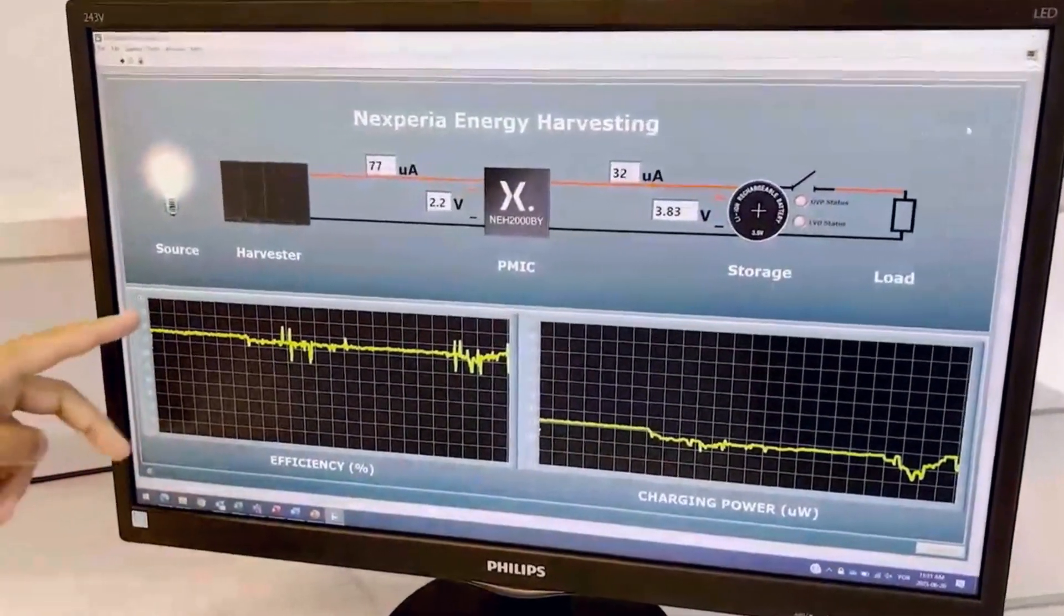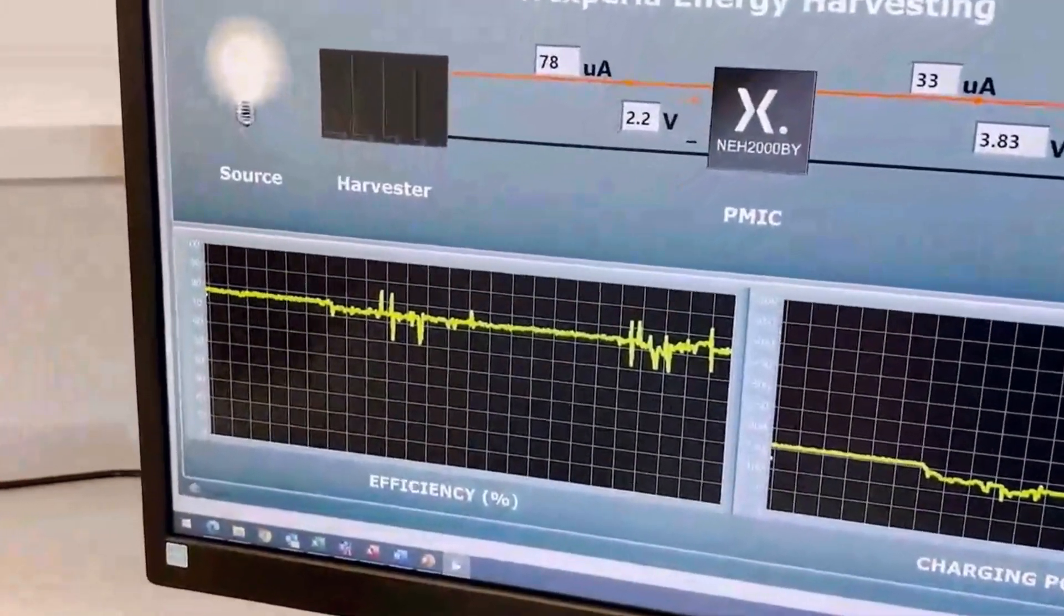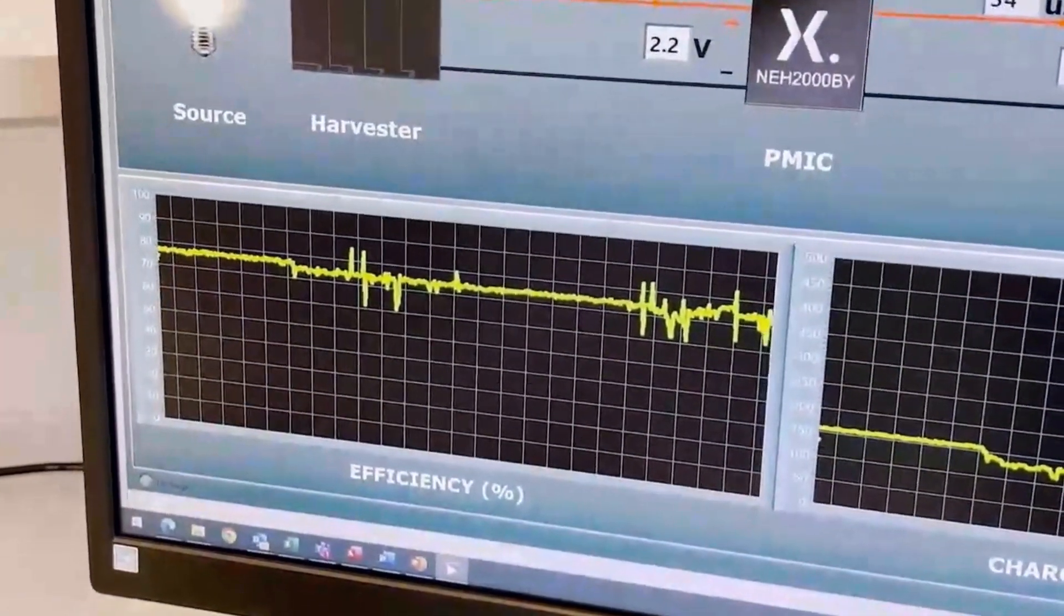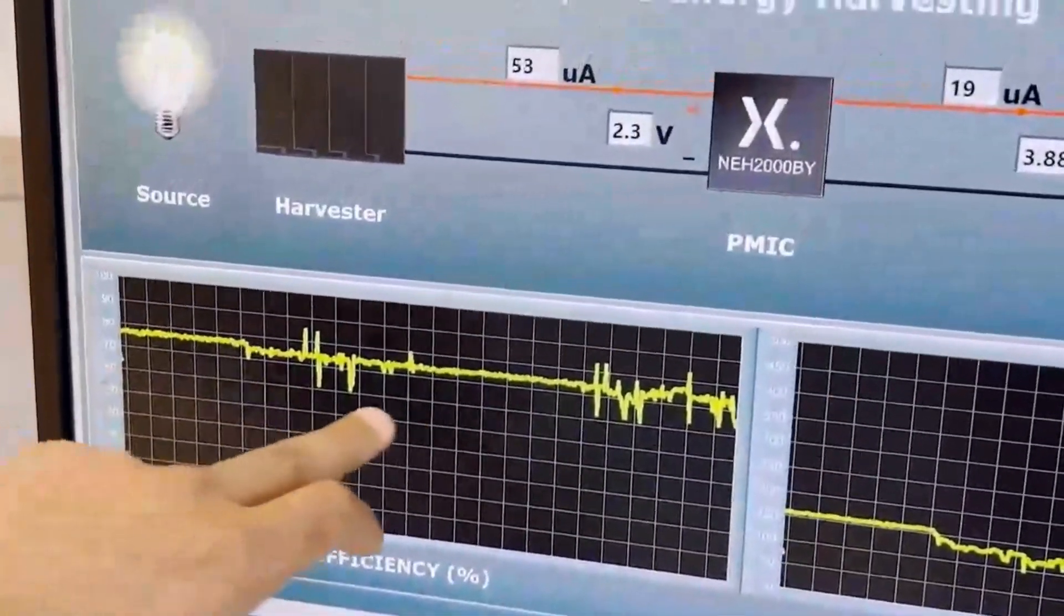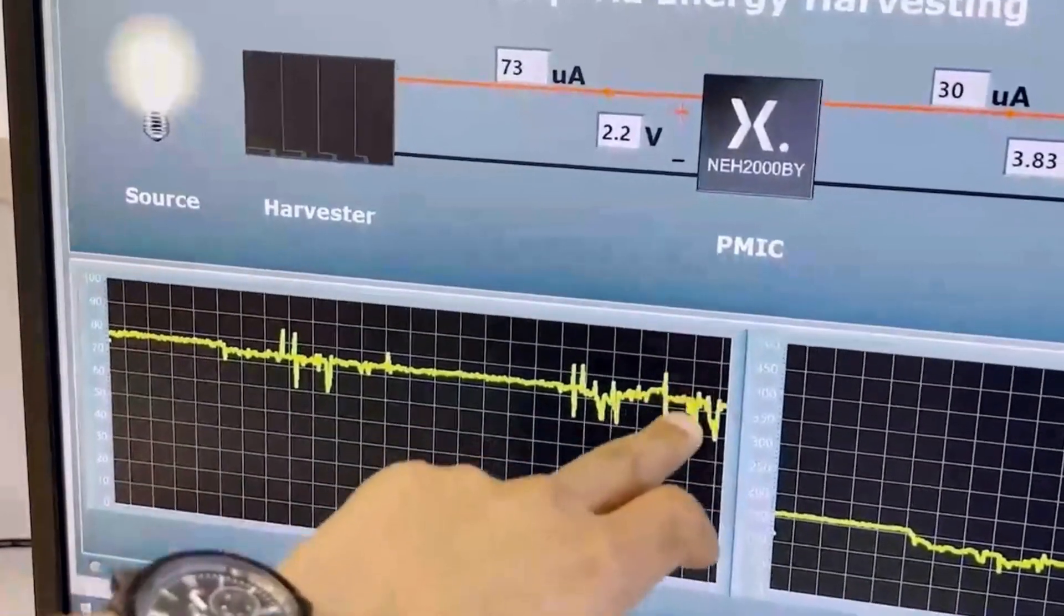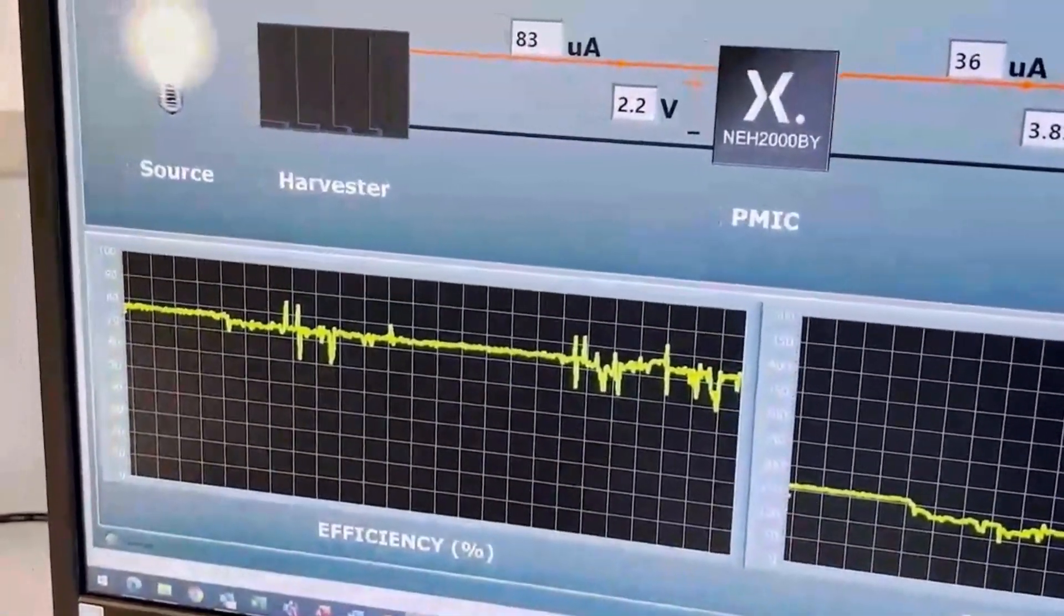This is the graph that represents in real time the conversion efficiency. Right now we are at 75, 80 percent efficiency right here.